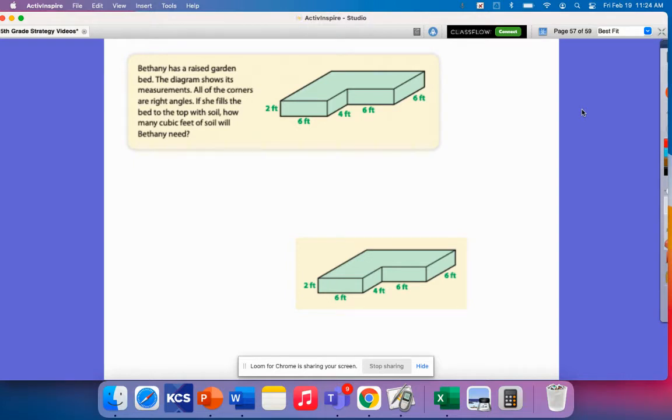A composite shape is a figure that can be divided into two or more geometric shapes. Think back about how you found the area of composite shapes back in like third or fourth grade. We're going to be doing something very similar to that. We're just going to be finding the volume of it. So we're going to do that same process of breaking the figure apart into two different shapes.